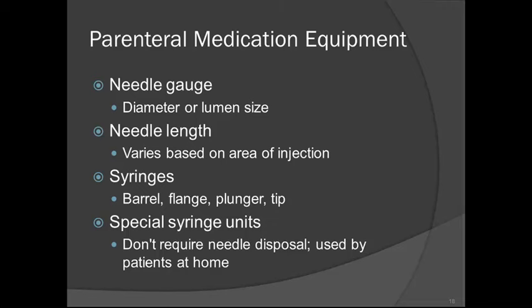Needle length varies based on the area of injection. For intramuscular injections this can range from one to three inches — a deltoid or vastus lateralis injection is typically one to one and a half inches, while a dorsal gluteal injection may need a two- to three-inch needle. For subcutaneous injections, a five-eighths inch needle is standard; for intradermal, three-eighths of an inch. In larger patients we may use up to a one-inch needle for subcutaneous to get past the dermis layer.